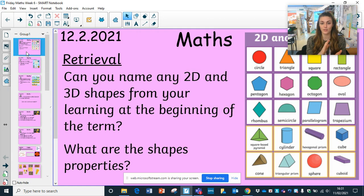So your retrieval is your 2D and 3D shapes, thinking about what the names of them are and then using the properties to describe them and identify them. Think using that key vocabulary: vertices, corners, faces, sides, all of those keywords that we have learned.